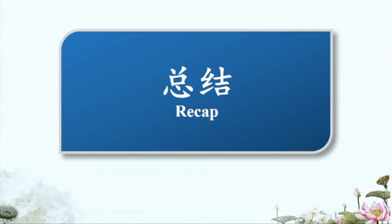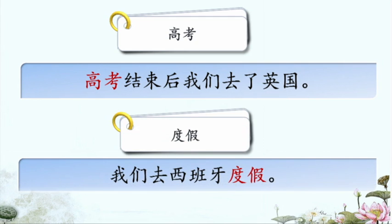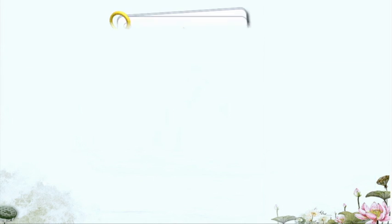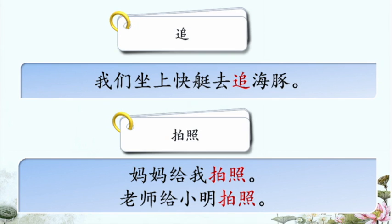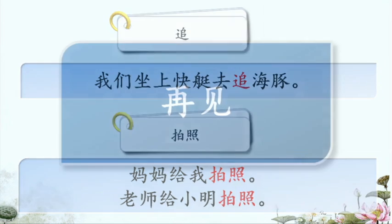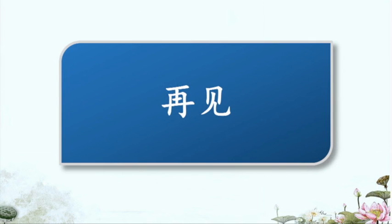总结 Recap: 高考。高考结束后，我们去了英国。度假。我们去西班牙度假。追。我们坐上快艇去追海豚。拍照。妈妈给我拍照。老师给小明拍照。希望你喜欢这堂课。Hope you have enjoyed this lesson. 再见。